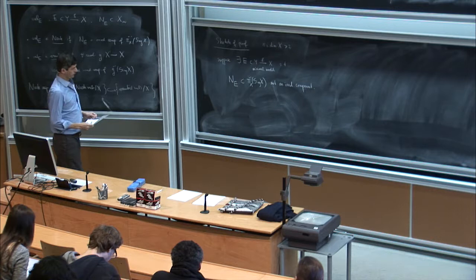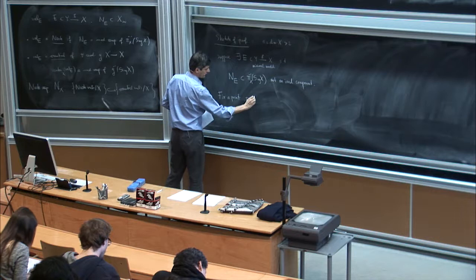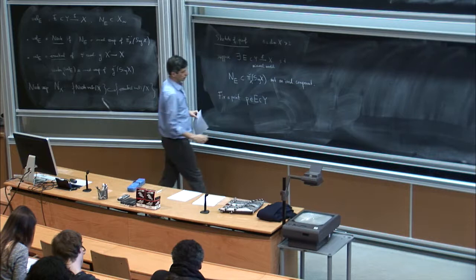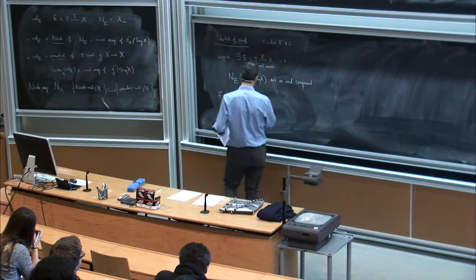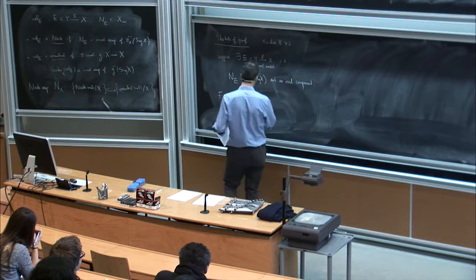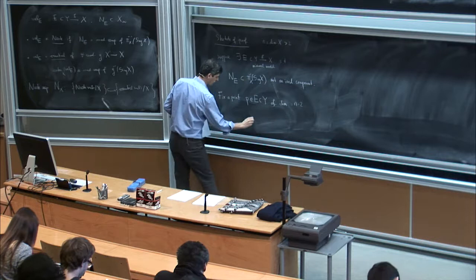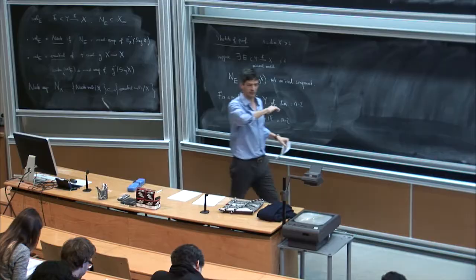Fix a point P inside E. In dimension two, this would be a closed point. In dimension three or higher, I want P to be a non-closed point, of codimension two in Y — meaning the residue field has transcendence degree n−2 over C, like a schematic point corresponding to a curve in dimension three. Then comes the key technical lemma: the curve selection lemma, going back to Lejeune-Jalabert and proved in general by Reguera.